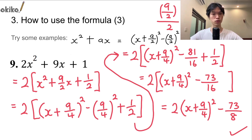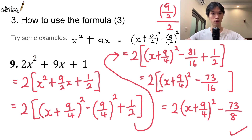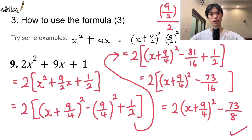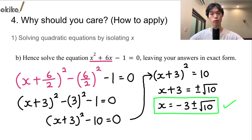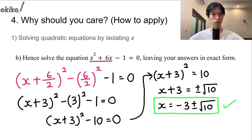So this is how you use the completing the square formula across these four examples. Even when you have unfriendly numbers, even when you have to factorize, the formula still remains the same — you just need to know where to apply it. With that being said, let's move on to number 4: why should you care, or more importantly, how to apply completing the square and where can you use it?